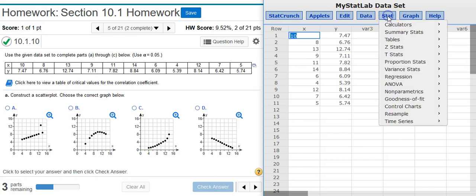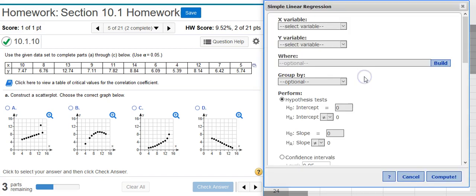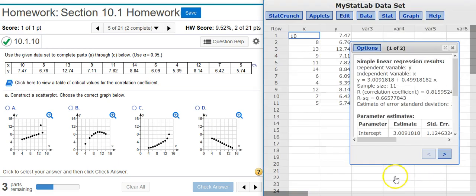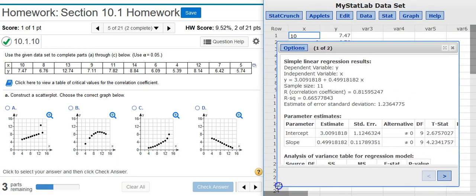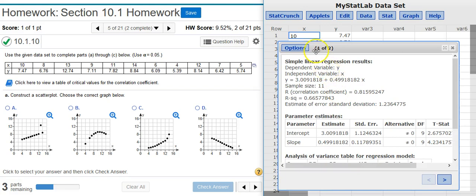To get there I'm going to go to stat, regression, simple linear. In the options window I'm going to select my x variable and my y variable and all the other default selections are good so we're going to compute. In the results window notice up here at the top it says one of two, that means you're looking at page one of two pages total.